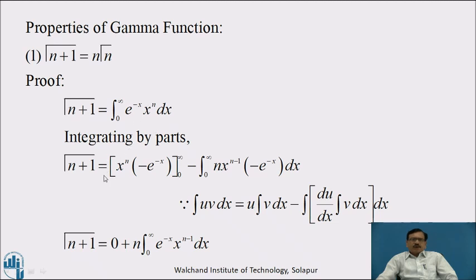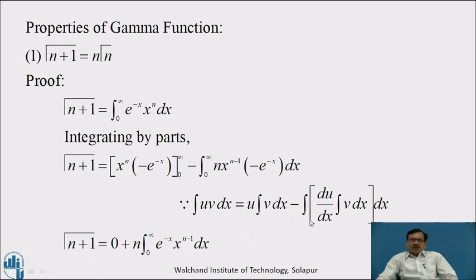Integrating by parts, we get: Γ(n+1) equals, taking u as x^n and v as e^(−x), keeping x^n as it is and the integration of e^(−x) is minus e^(−x), with limit 0 to infinity, minus integration from 0 to infinity of the derivative of x^n, which is n·x^(n−1), times minus e^(−x) dx. This uses the formula: ∫u·v dx = u·∫v dx − ∫(du/dx · ∫v dx) dx.